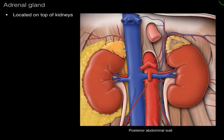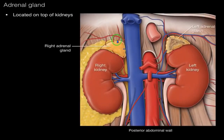Adrenal gland. It is located on top of kidneys. This is the right adrenal gland and this is the left adrenal gland — adrenal gland is located above each kidney.